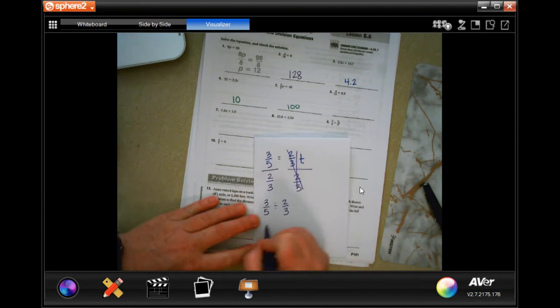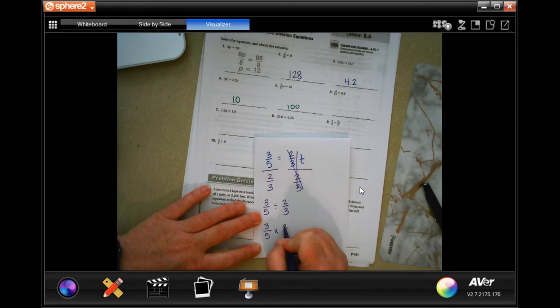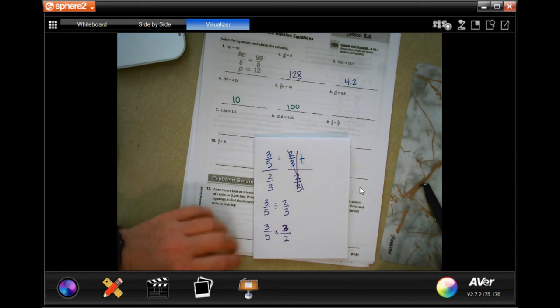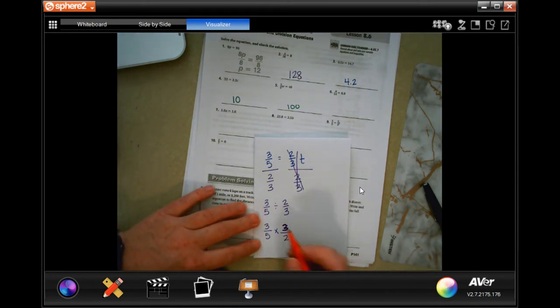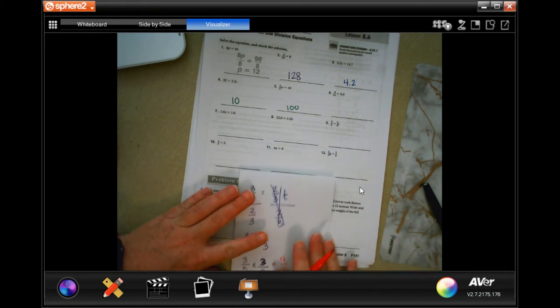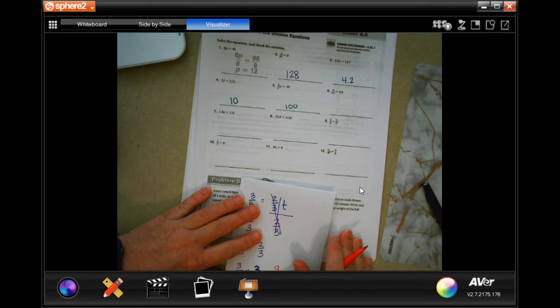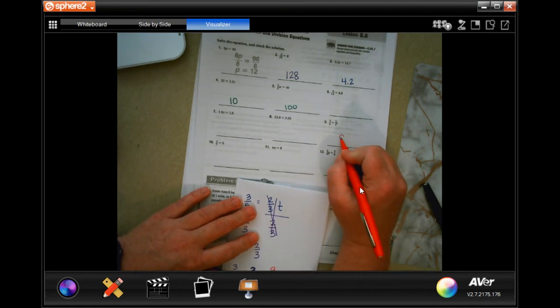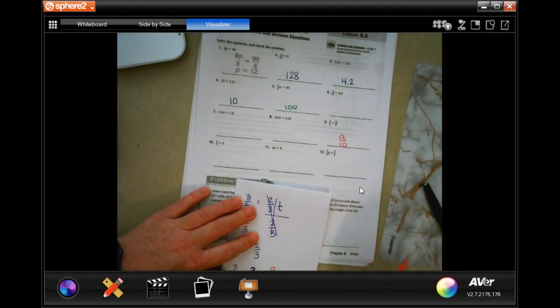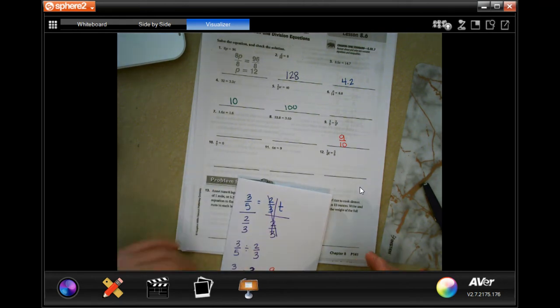Then, I'm going to keep, change, flip. Now, I can't reduce anything there. So, I'm going to get 9 over 10.